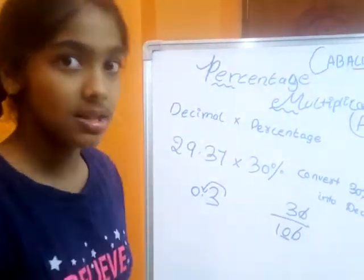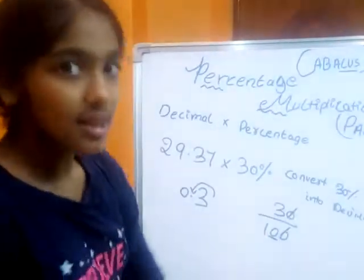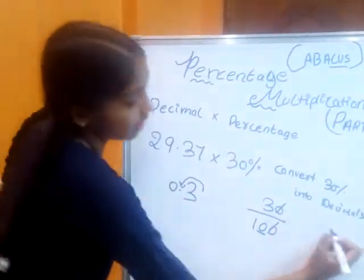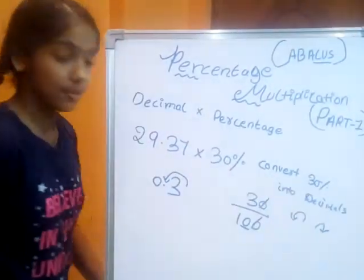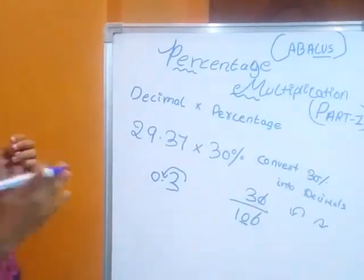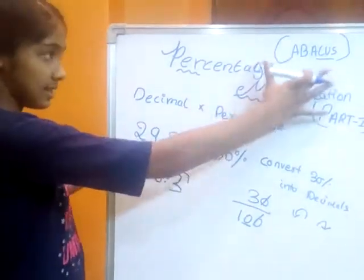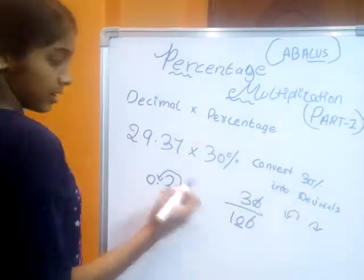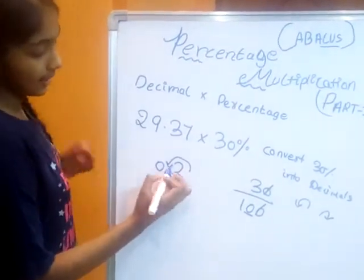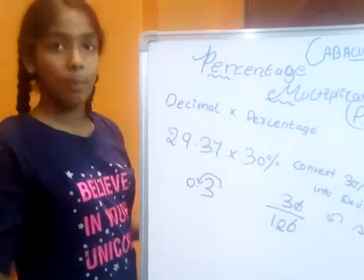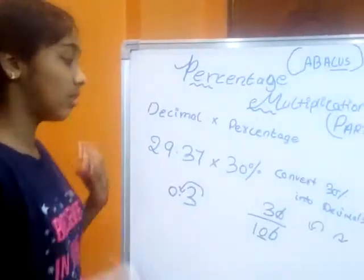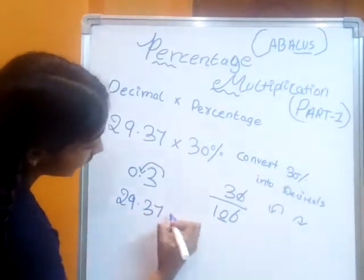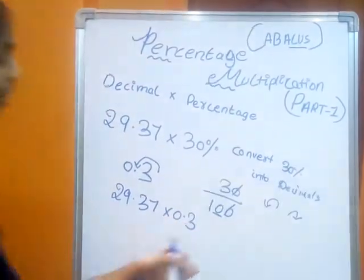In our classes we take this direction for multiplication and the other direction for division. But in the Abacus method, we take this side for multiplication. So the decimal point is here and we get 0.3. We need to multiply 29.37 into 0.3.